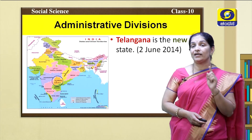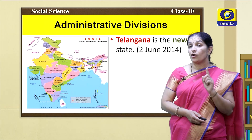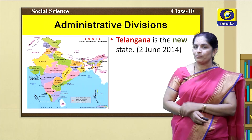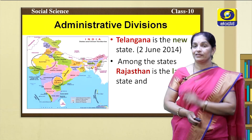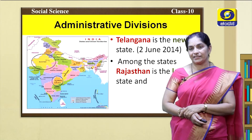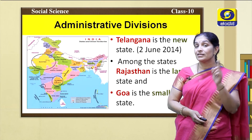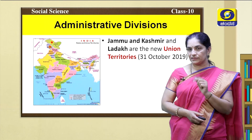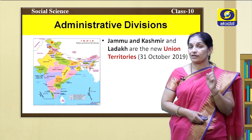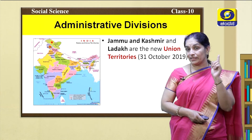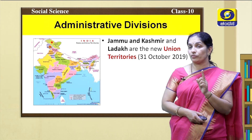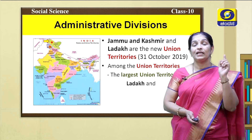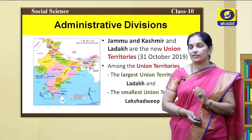Telangana is the new state formed on 2nd June 2014. Rajasthan is the largest state in India, and Goa is the smallest state in India. Jammu and Kashmir and Ladakh are the new union territories — they came into existence on 31st October 2019. Among the union territories, Ladakh is the largest and Lakshadweep is the smallest union territory.